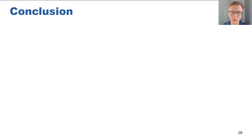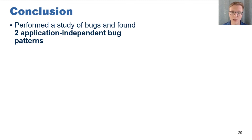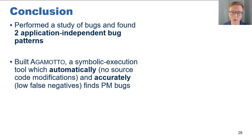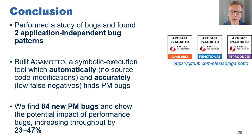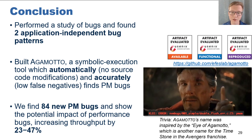In conclusion, we performed a study of persistent memory bugs and discovered two application-independent patterns of bugs. This insight allowed us to build Agamotto, which leverages the power of symbolic execution in combination with application-independent bug patterns to accurately and automatically detect persistent memory bugs. We then use Agamotto to find 84 new bugs in a variety of persistent memory applications, and demonstrate a throughput increase of up to 47% in our performance case study. Agamotto has gone through the OSDI 2020 artifact evaluation process and has earned all three badges. You can find Agamotto's source code and other documentation at the link provided. Thank you for listening.